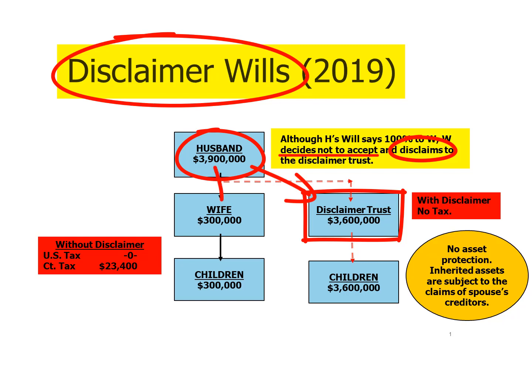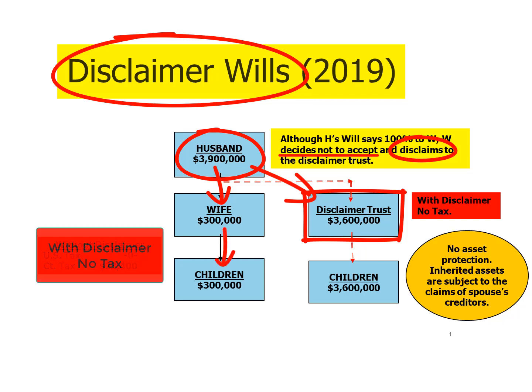When the surviving spouse passes away, her estate will be small — just $300,000 — well below her estate tax exemption expected to apply at her death. So all of the surviving spouse's $300,000 passes to the children tax-free. The disclaimer trust has been sheltered from tax by the husband's exemption of $3.6 million, so when that $3.6 million passed to the disclaimer trust, no tax applied because the husband's exemption covered it.